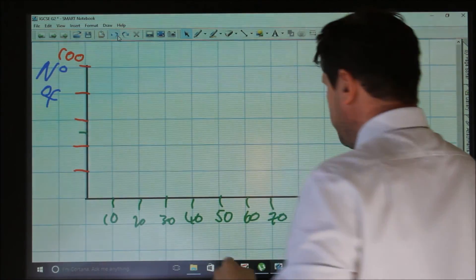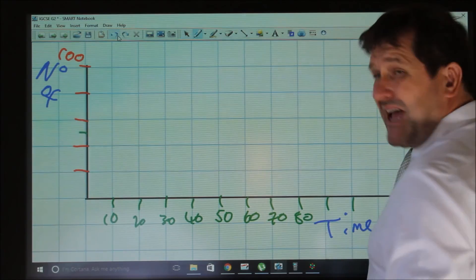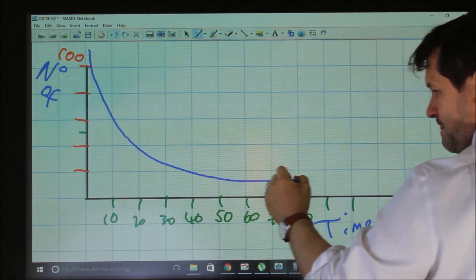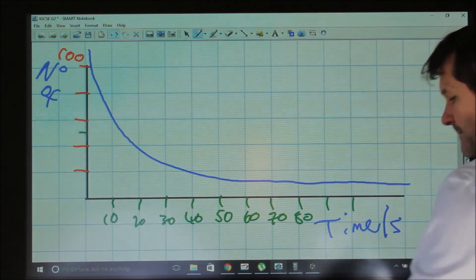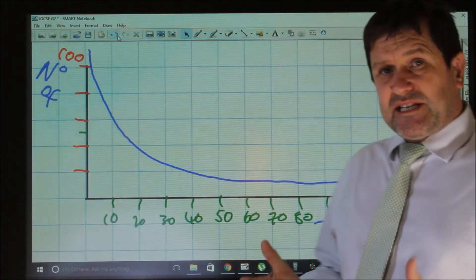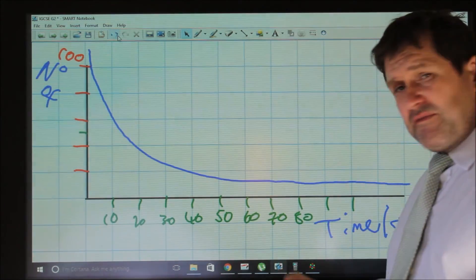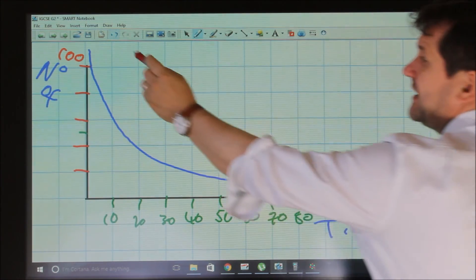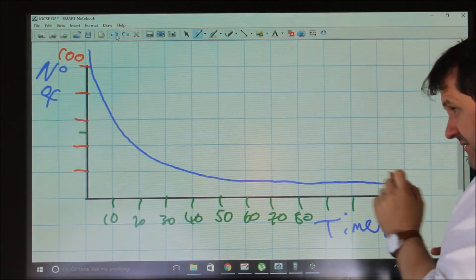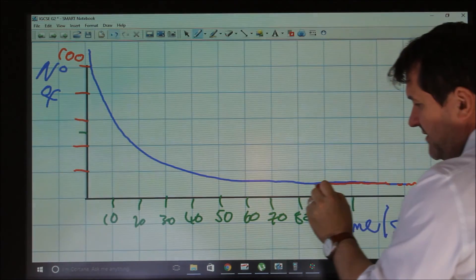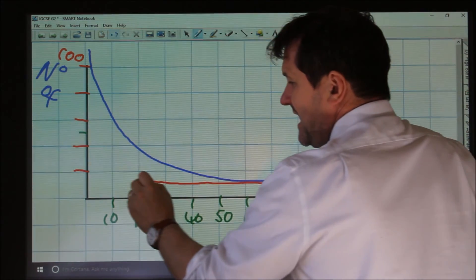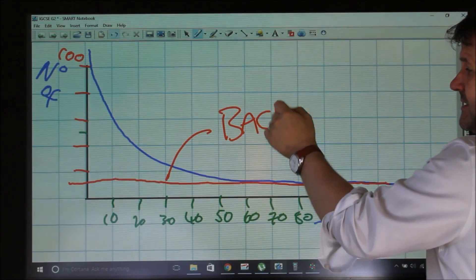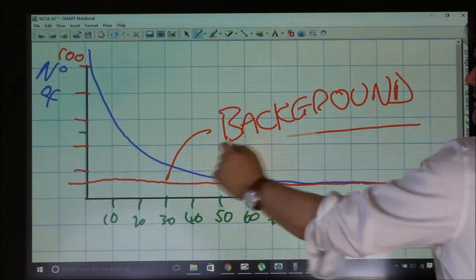In reality, the graph would decay like this. Now, a question in the exam could ask you to determine half-life from the graph, but a question might say, 'Why does the graph level out at this point here?' And of course, the reason would be because of background radiation.